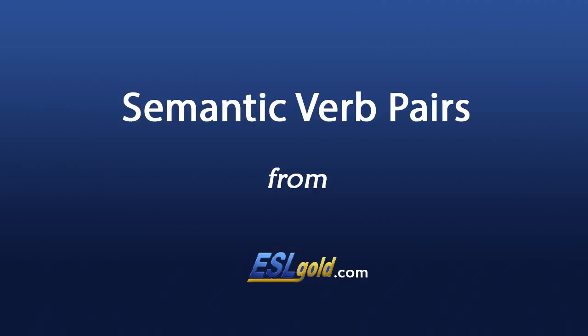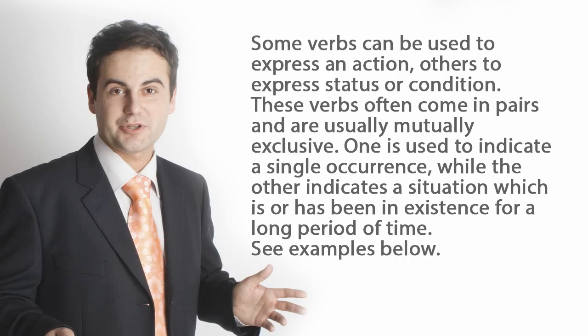Semantic verb pairs. Some verbs can be used to express an action, others to express status or condition. These verbs often come in pairs and are usually mutually exclusive. One is used to indicate a single occurrence, while the other indicates a situation which is or has been in existence for a long period of time. See examples below.